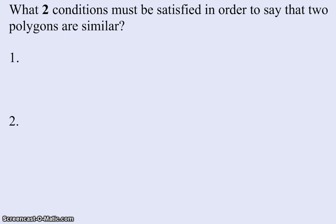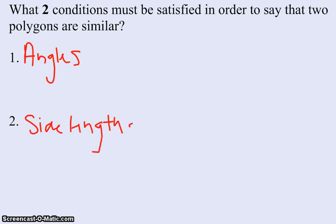So it's kind of asking what two conditions must be satisfied in order to say that two polygons are similar. We have to compare two things. We have to compare the angles, looks like the smart board isn't doing too much better, and we have to compare the side lengths. The thing is that the angles have to be the same. They have to be congruent.